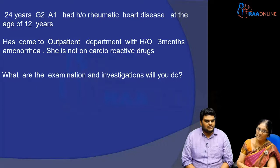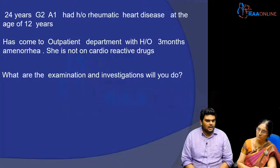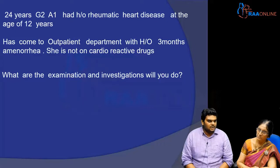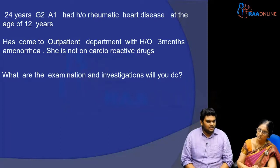I would like to first do the general examination for the patient, where I would like to see if the patient has any anemia, clubbing, cyanosis, and whether she has an increased JVP to see if there is any cardiac failure. I would also like to see if the patient is running any temperature to rule out infective endocarditis, and whether she has an enlarged thyroid to rule out hyperthyroidism.